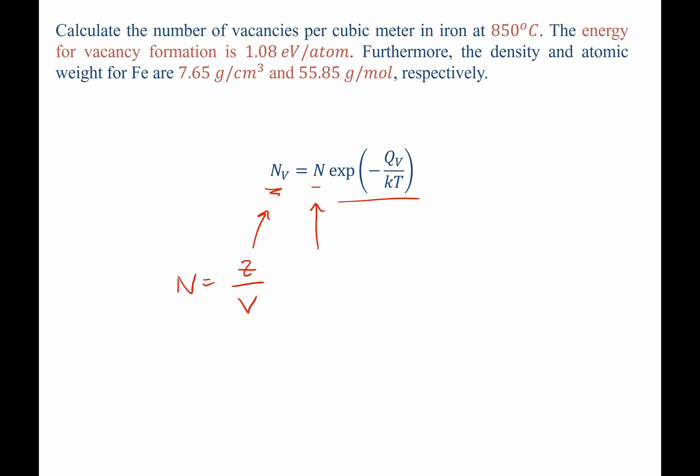Well, we can use our density expression to help us out. We know from the theoretical density expression, rho TD, that this equals the number of atoms times the molecular weight of, say, iron. This will be divided by a volume times Avogadro's number.